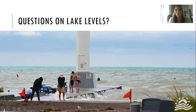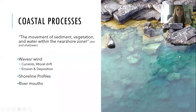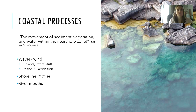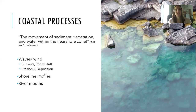Now we're going to talk about coastal processes. What is a coastal process? Coastal processes are the movement of sediment, vegetation, and water within the near shore zone — that water from the shoreline, zero centimeters to six meters deep. Coastal processes consist of waves and wind, which are kind of synonymous with one another, the currents of Lake Huron, littoral drift, erosion and deposition, and then shoreline profiles and river mouths. We're going to talk about all of those.